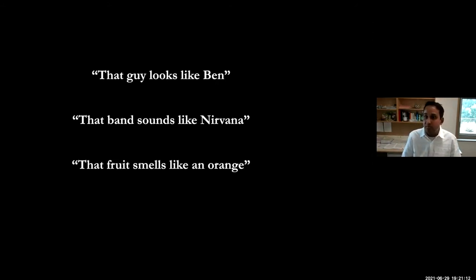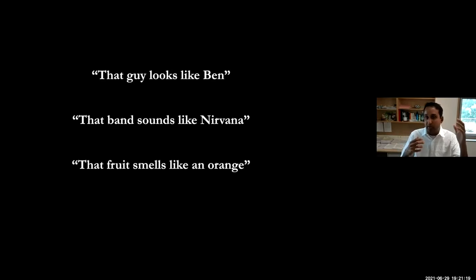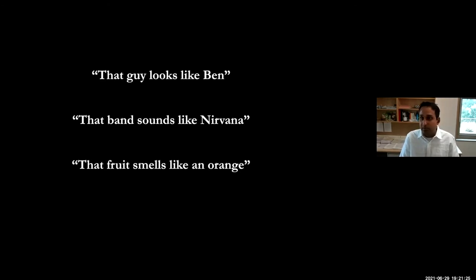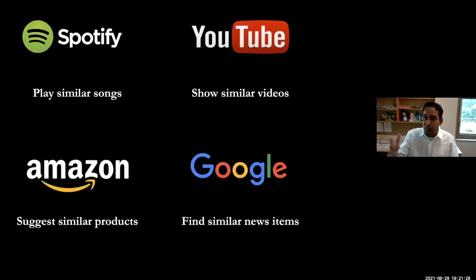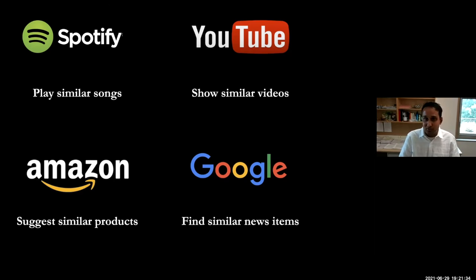This is happening seamlessly all the time. This basic problem — here's a large database, here's a query, find similar items — comes up in lots of applications: YouTube shows similar videos, Google shows similar news items, Spotify shows similar songs. I want to describe one core algorithm that has been used for a long time to solve this problem.